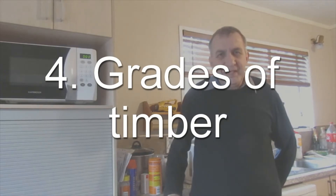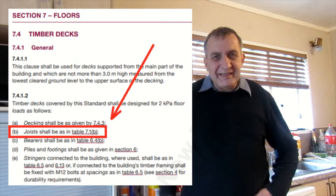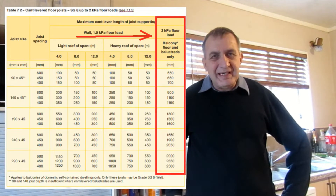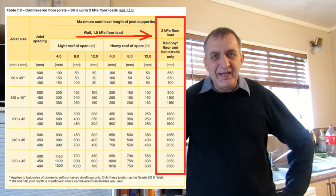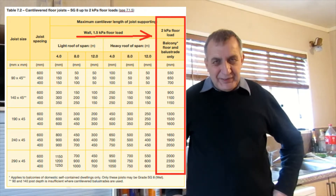As with the bearers, there are also three different grades: SD6, SD8, and SD10. In NZS 3604 under section 7.4, there's a line which indicates which table to follow and which grade to use — that is table 7.1B and the grade is SD8. If you're using cantilever joists for your deck there's a separate table, table 7.2, and the right-hand column of this table has some sizes for the joists for your deck.